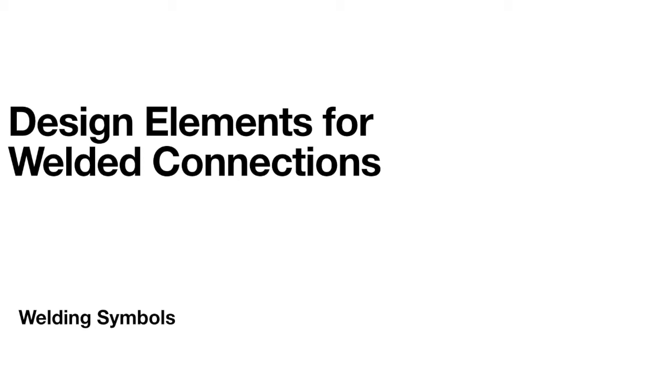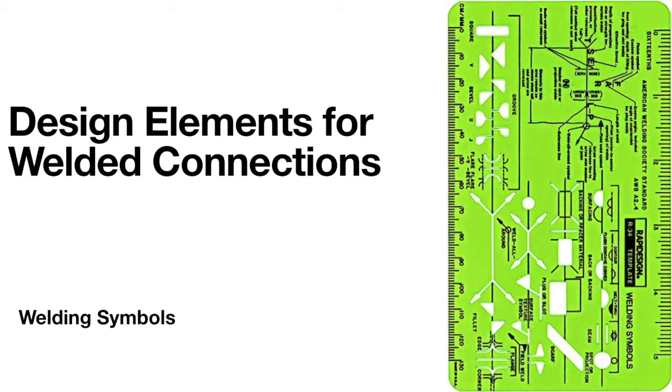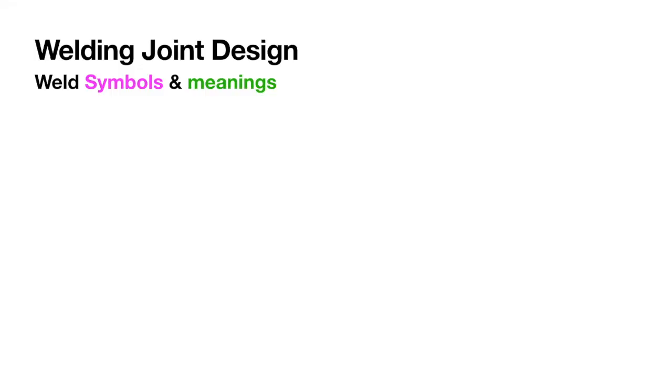We will move to our next section which is welding symbols. Welding symbols are shorthand language for the welder. They save time and money and serve to ensure understanding and accuracy. Welding symbols have been standardized by the American Welding Society (AWS).